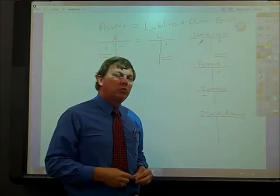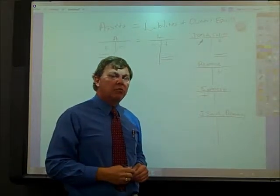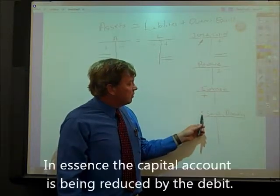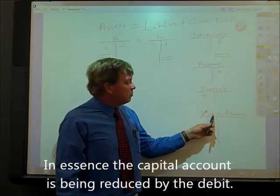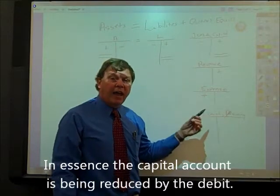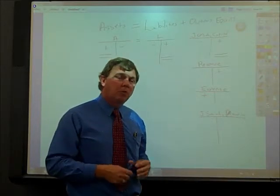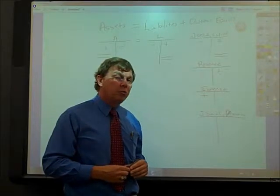The other way to decrease owner's equity is through a withdrawal. For a sole proprietorship, we would say something like Jim Smith Drawing, showing the account that we're going to use to monitor the owner's withdrawals through the year.